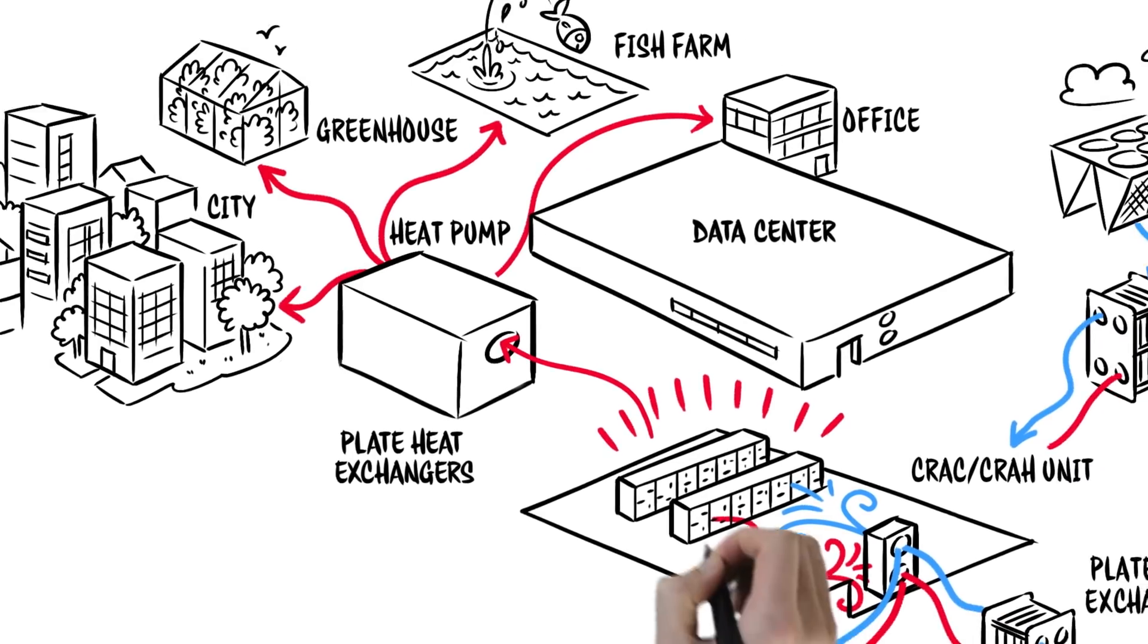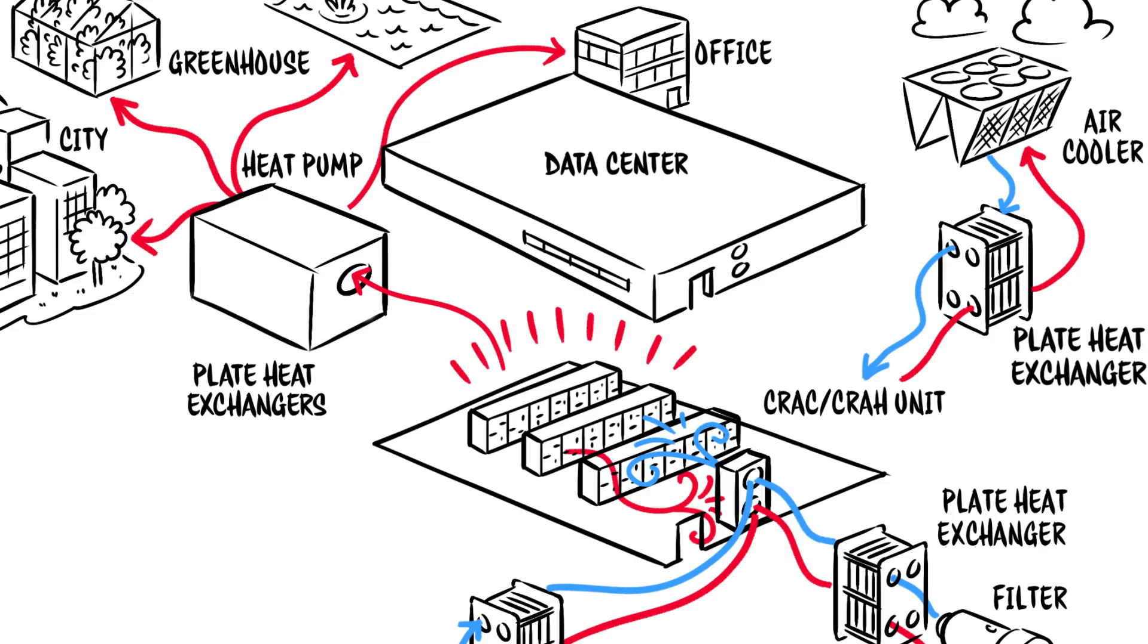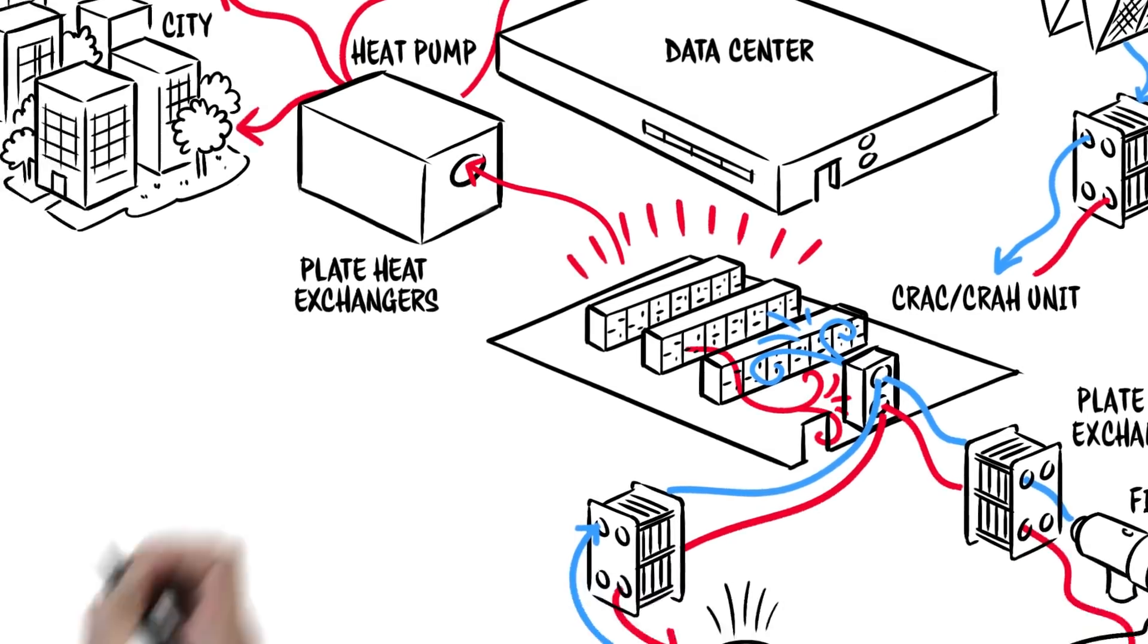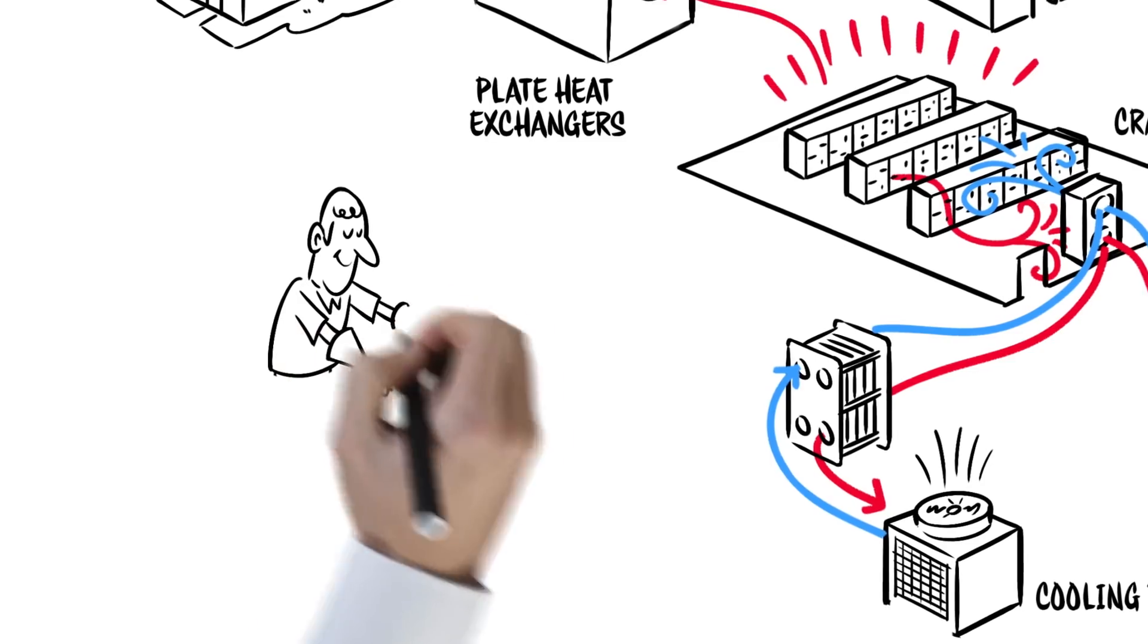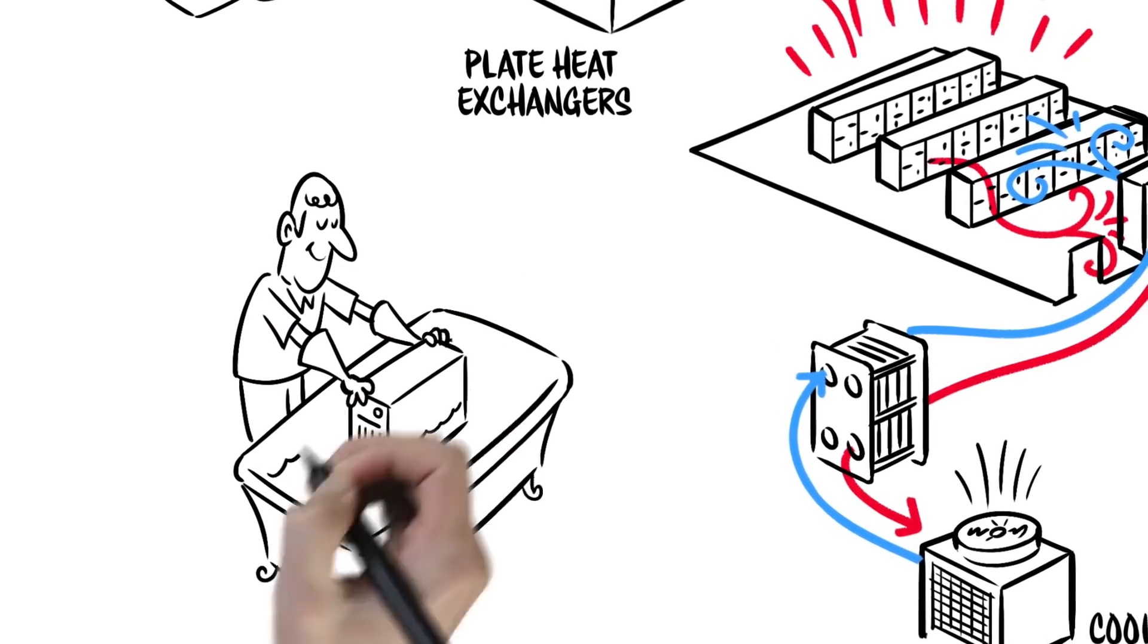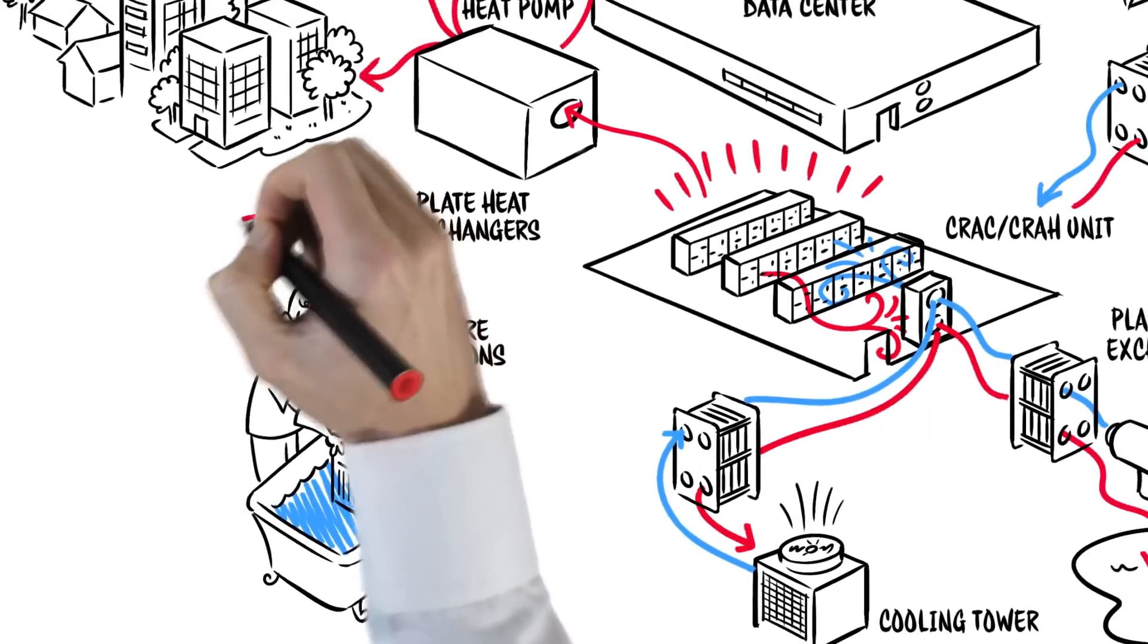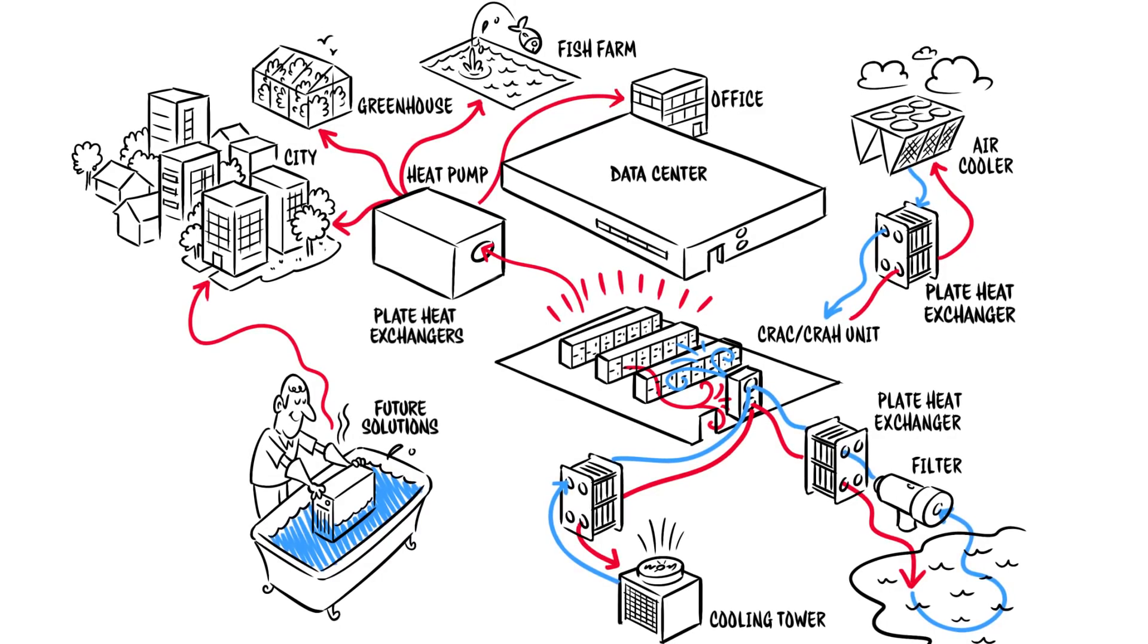As data center demands continue to evolve, the right utility cooling system with efficient plate heat exchangers at the core can help you meet tomorrow's challenges. Alfa Laval's next generation heat exchanger technology is perfect for the new liquid cooling systems like submersion, immersion, and cold plate, which will be necessary as increasingly powerful servers are installed.